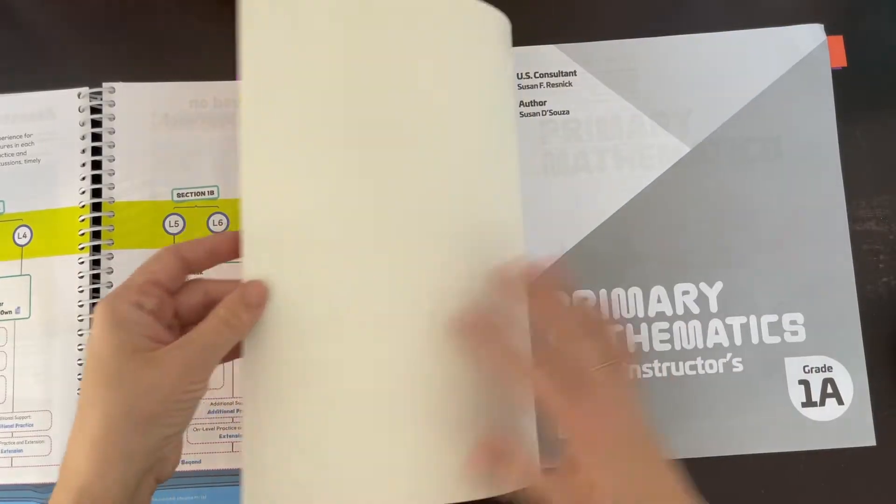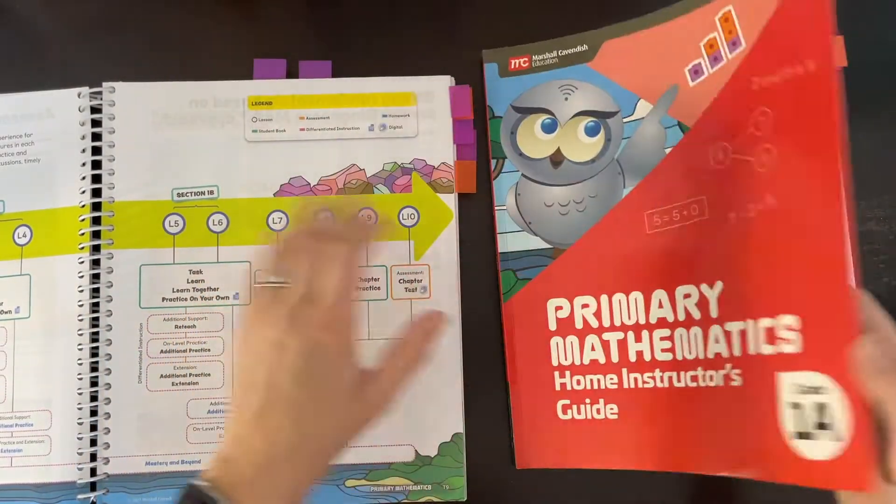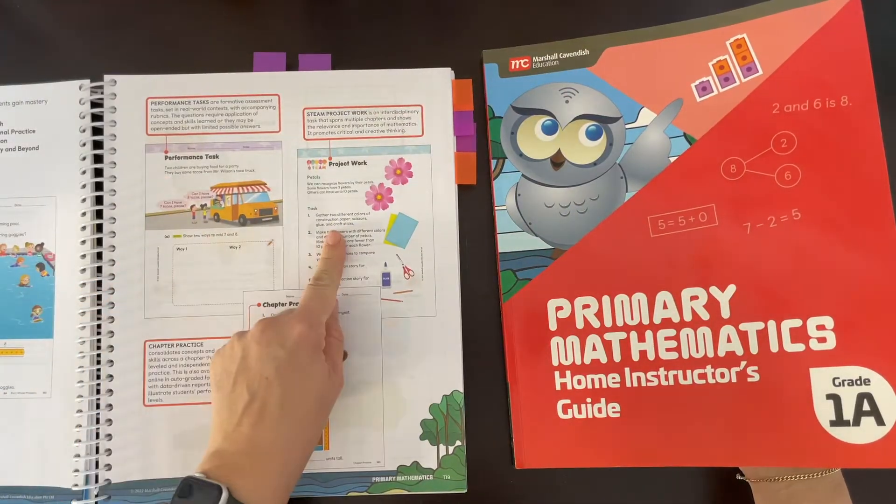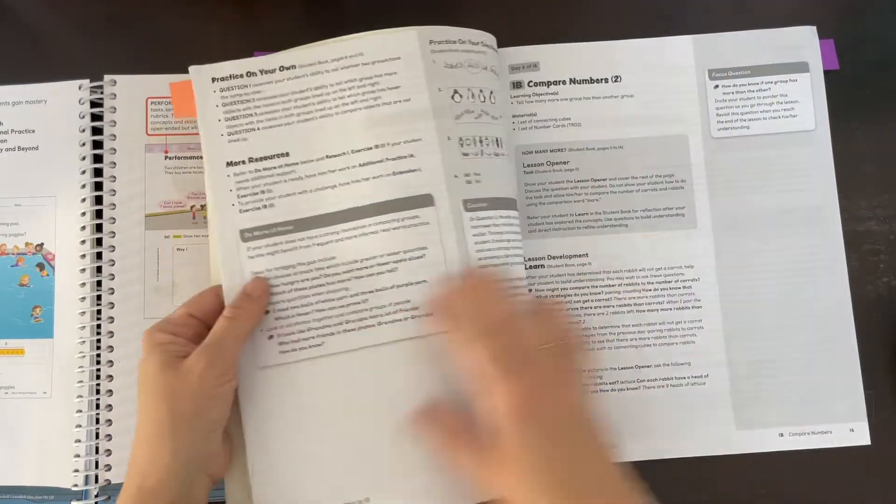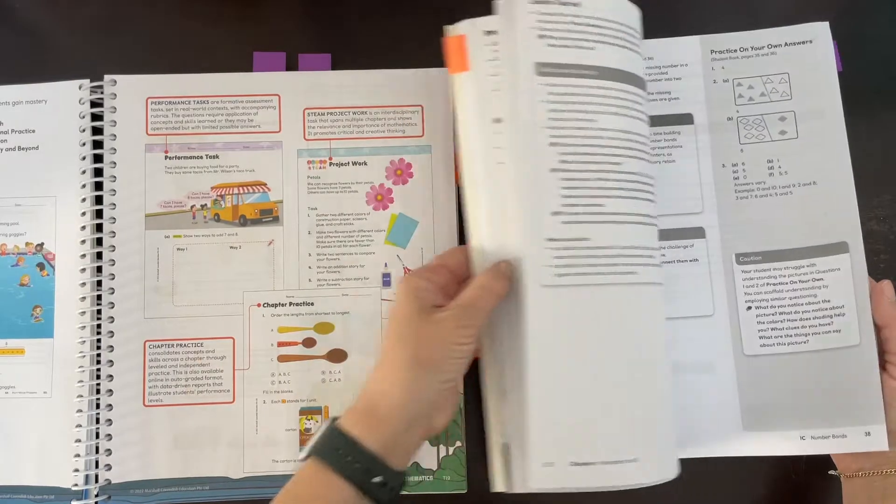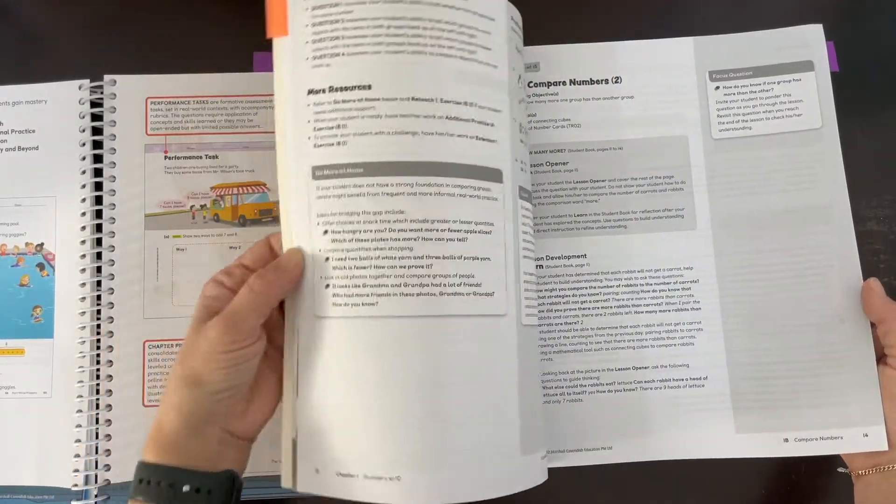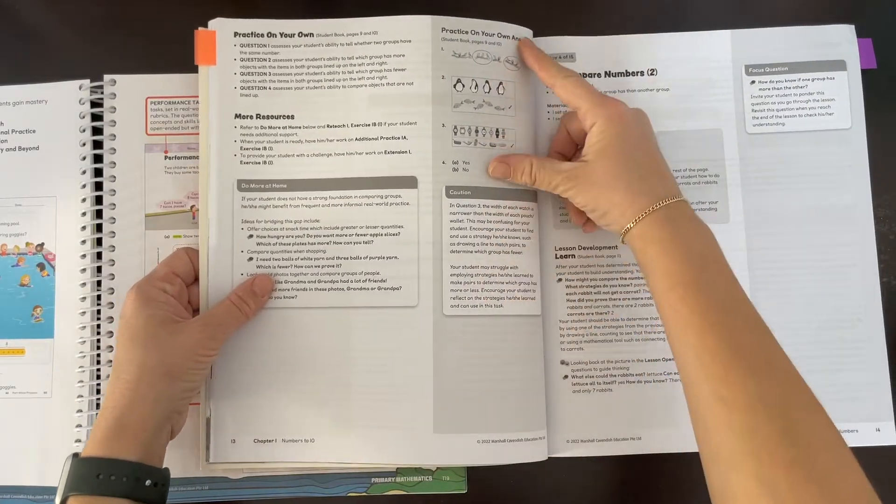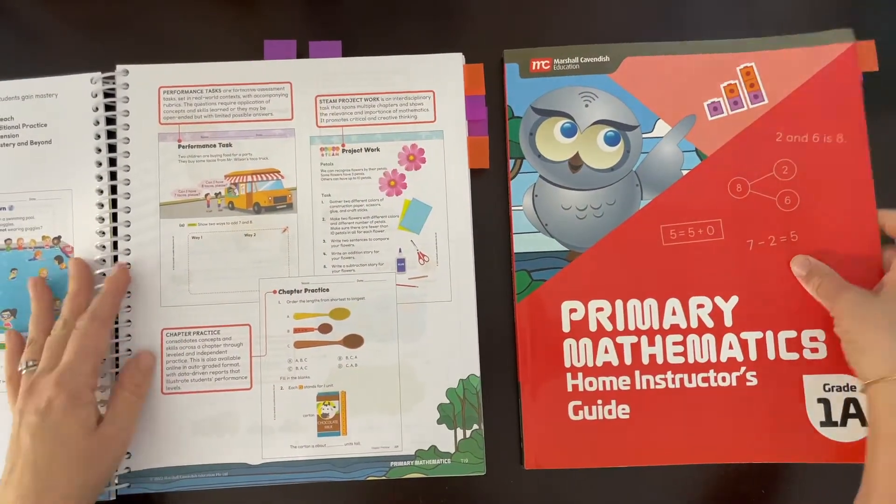So the books themselves, the biggest difference is black and white versus color. We have the student pages embedded in the teacher guide, and we do not have those in the home instructor's guide. That's how they're cutting costs—by having black and white and fewer pages. They do have the answers in here though, which for first grade isn't so important, but fourth or fifth grade, sure, I will take an answer key.